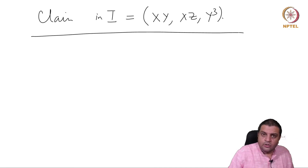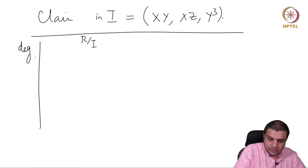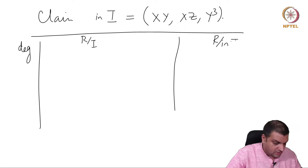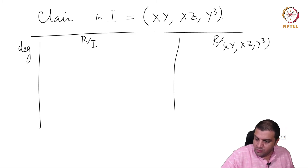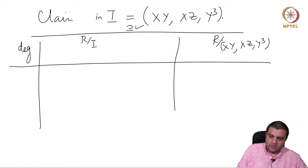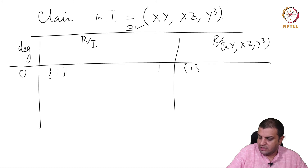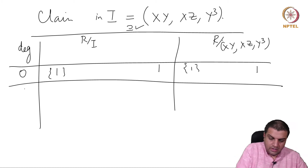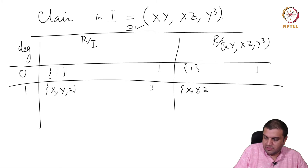We check this by comparing Hilbert functions of R mod I and R mod (x*y, x*z, y cubed). In degree 0, the basis is just {1}, Hilbert function equals 1 for both. In degree 1, we have only killed higher-degree polynomials, so the basis is {x, y, z}, Hilbert function equals 3 for both.